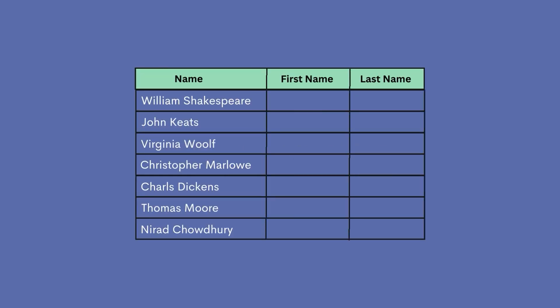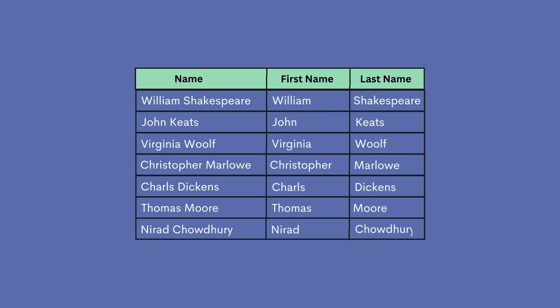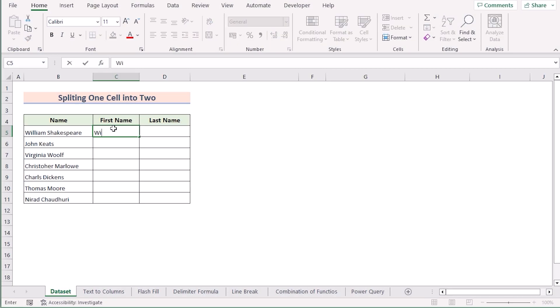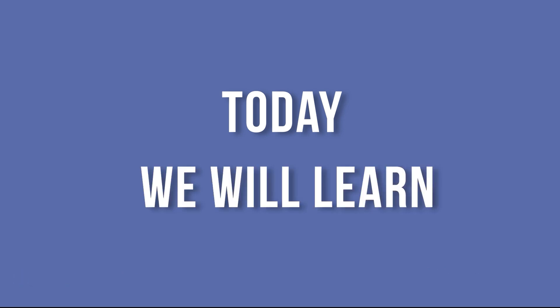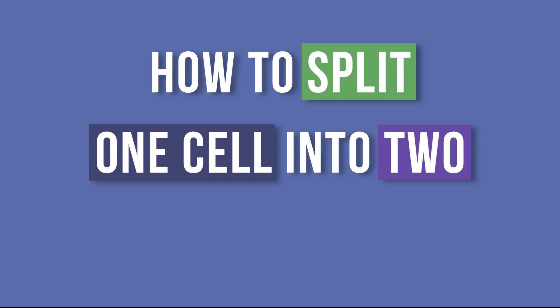Hello everyone. Suppose you have a dataset where a single cell contains information that needs to be displayed in separate columns for better readability and formatting. Then you know how important it is to split one cell into two in Excel. We can easily do this within a second. This is Jihadriyan Jim from Excel Demi, and today we will learn several methods on how to split one cell into two in Excel. Let's get started.